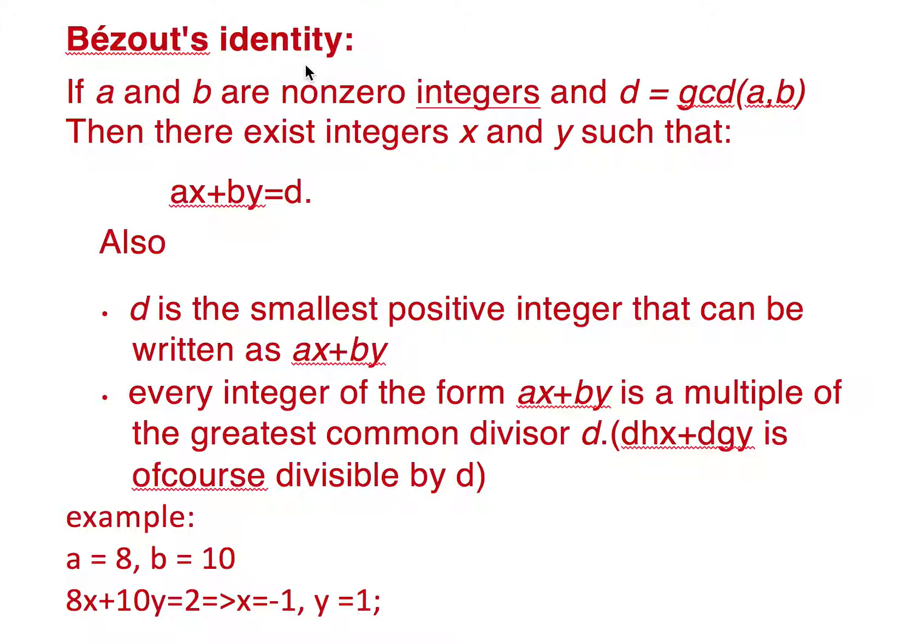So this is Bézout's identity, a very simple identity. And looking at this equation ax plus by equals gcd of a comma b, I think you are reminded of the Extended Euclidean Algorithm.